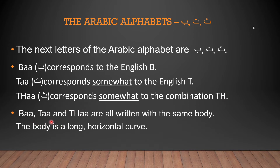Ba, Ta, and Sa are all written with the same body. Ba is like a long horizontal curve, Ta is also like this, and Sa is also like this — they all share that same long horizontal curve shape.